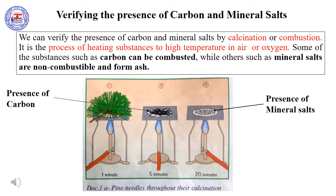Look at Document A. Let's observe the calcination of pine needles at 1 minute, 5 minutes, and 20 minutes. After 1 minute of calcination, the pine needles remain green. However, after 5 minutes, the pine needles become black, indicating the presence of carbon. Moreover, after 20 minutes, we observe ash, which indicates the presence of non-combustible mineral salts.